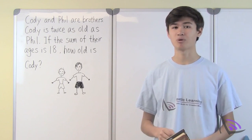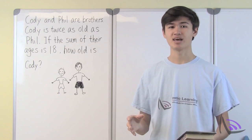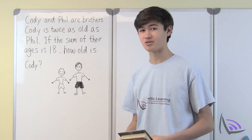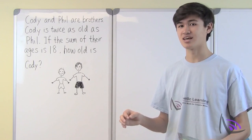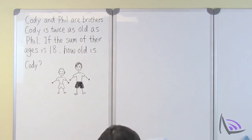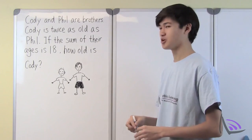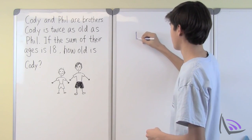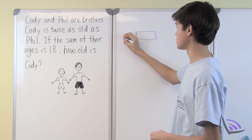Let's look at a couple of problems to see how we can use bar diagrams to represent and solve problems. The first problem is: Cody and Phil are brothers. Cody is twice as old as Phil, and their ages add up to 18. How old is Cody? First, let's represent Phil's age by using one bar right here — that will be Phil's age.